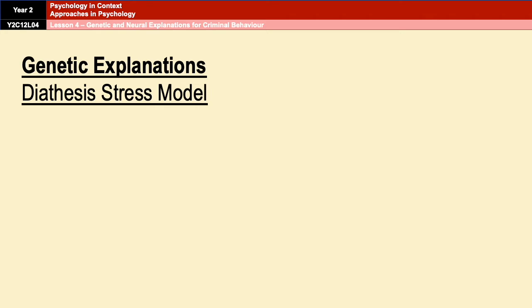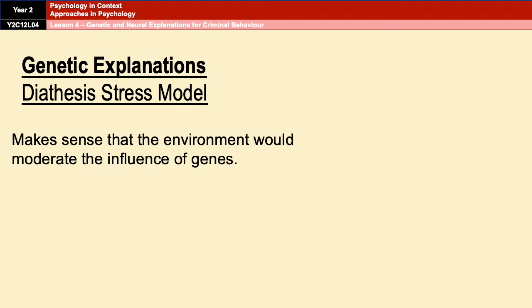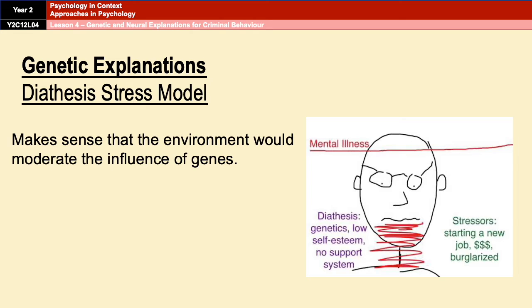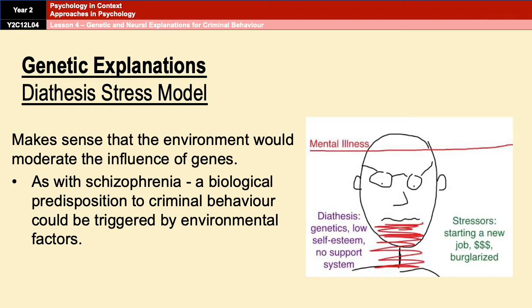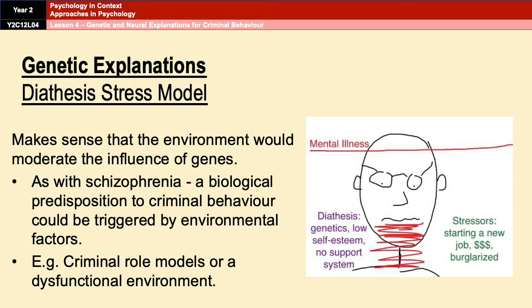If genes are involved in offending behaviour, it seems highly likely that those genes could be moderated by the environment. In other topics like schizophrenia, we've seen that genetic vulnerability combined with a psychological or biological trigger can bring about the onset of a condition. Similarly, offending behaviour could be caused by the same combination — a genetic vulnerability brought about by the MAOA or CDH13 genotype, combined with being raised in a dysfunctional environment or with criminal role models, triggering criminal behaviour. The diathesis stress model is equally applicable here.